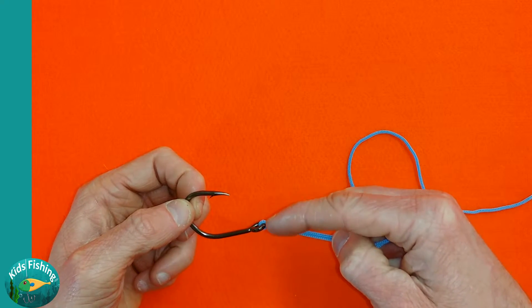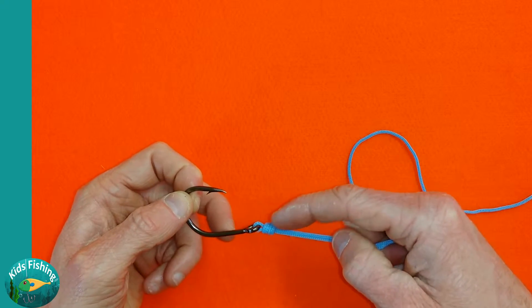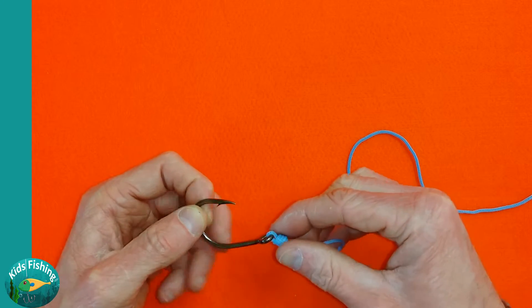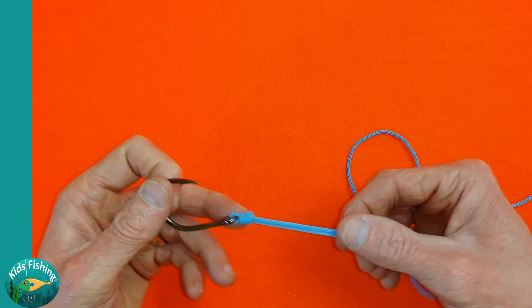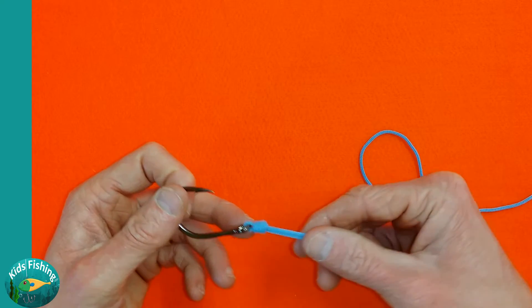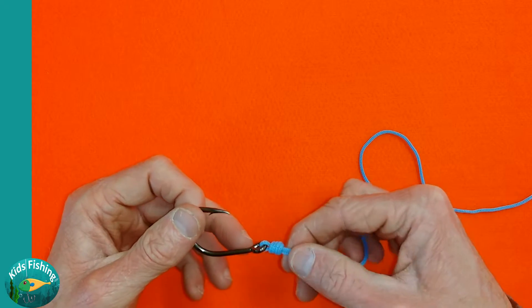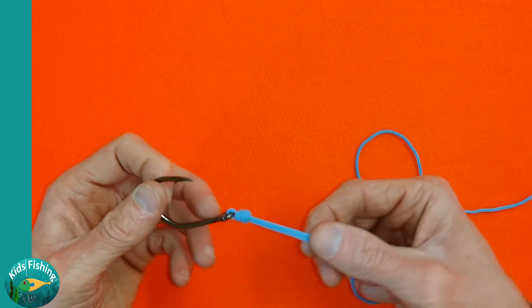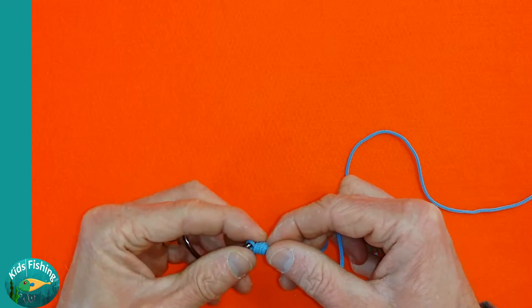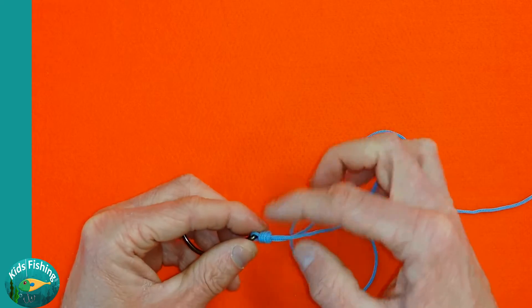When you're tying the uni knot, you will tie somewhere between three and maybe seven wraps through the loop, and that depends on the type of line and the thickness that you're using, whether it's braid, nylon or fluorocarbon, and the thickness of the line itself. Because this is cord we're only doing three, but if this was very thin nylon we would probably do something like seven wraps through our loop to create our uni knot.